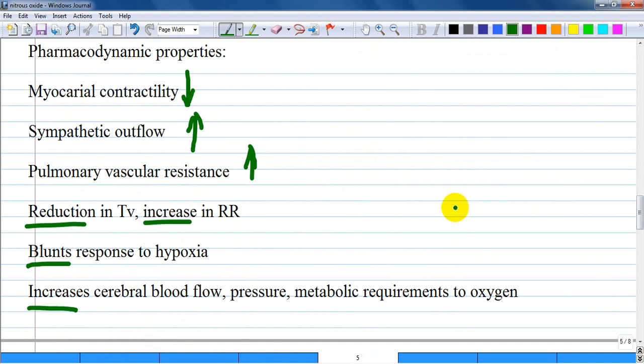On the cardiovascular system, it reduces myocardial contractility but increases sympathetic outflow, resulting in minimal change in blood pressure. It also increases pulmonary vascular resistance, so you should avoid using nitrous oxide in patients with pulmonary hypertension.